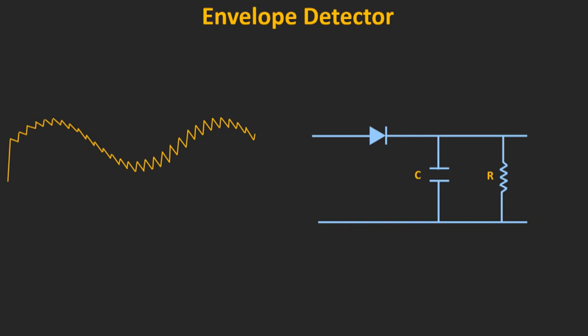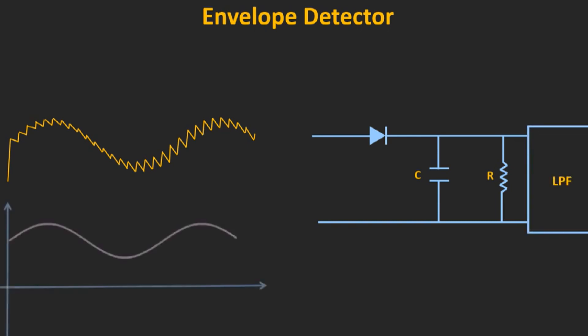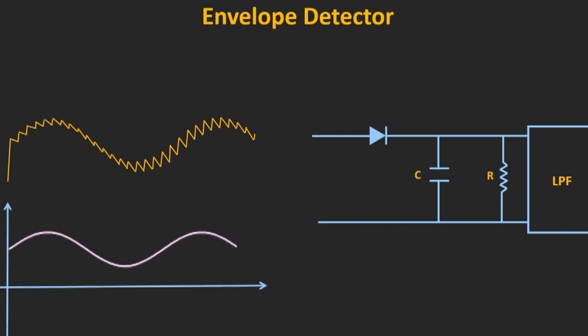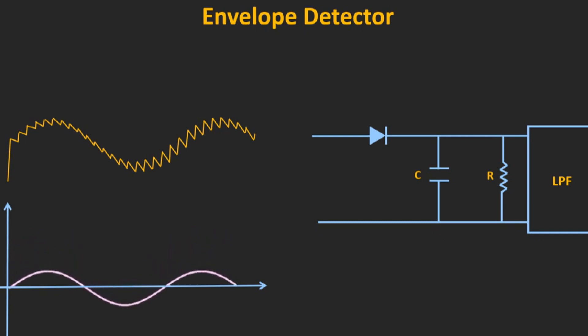Using a low-pass filter, the ripples in the output can be removed. And further, using a DC blocking capacitor, the DC component can be removed. In this way, it is possible to recover the message signal from the AM signal using this envelope detector.